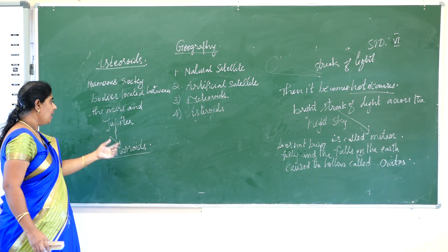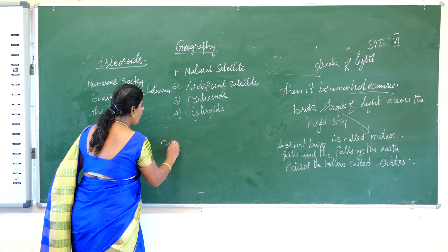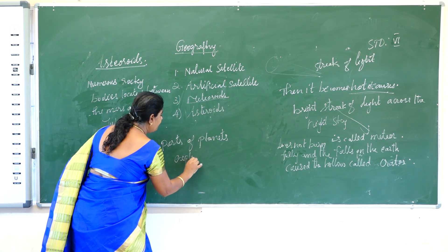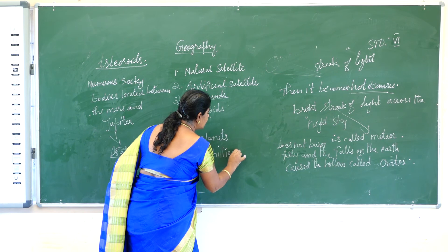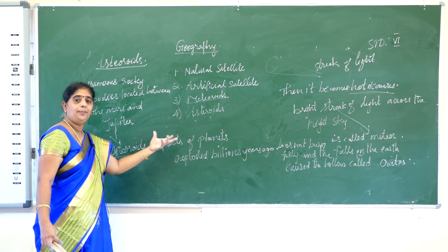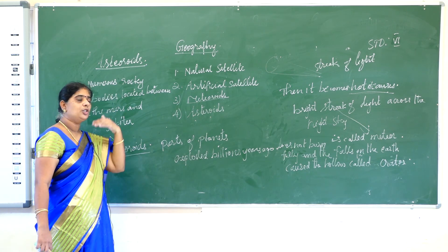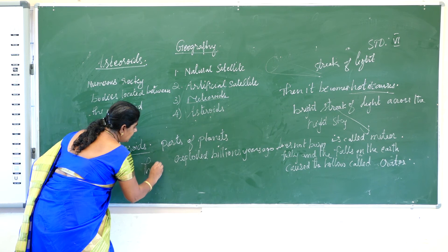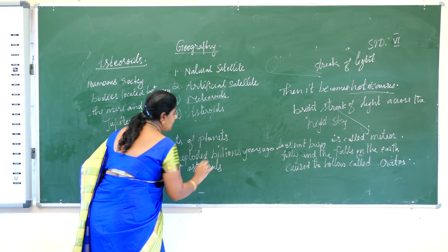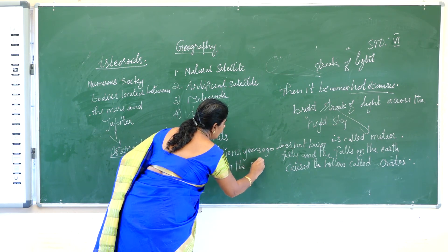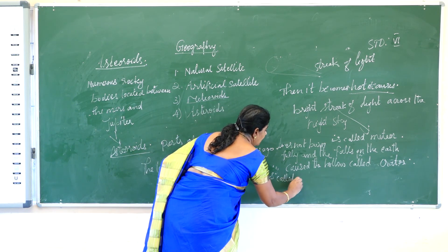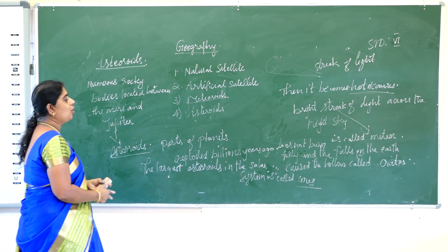According to scientists, how were these asteroids formed? They are parts of planets that exploded billions of years ago. These are the parts of planets that were exploded billions of years ago. The largest asteroid in the solar system is called Ceres.